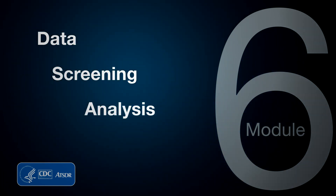This module is the sixth in an eight-module series about ATSDR's methods used as part of the PHA process. In prior modules, you learned about ATSDR and the health assessment process. You also learned about the elements of an exposure pathway and about the selection of appropriate data for the PHA.